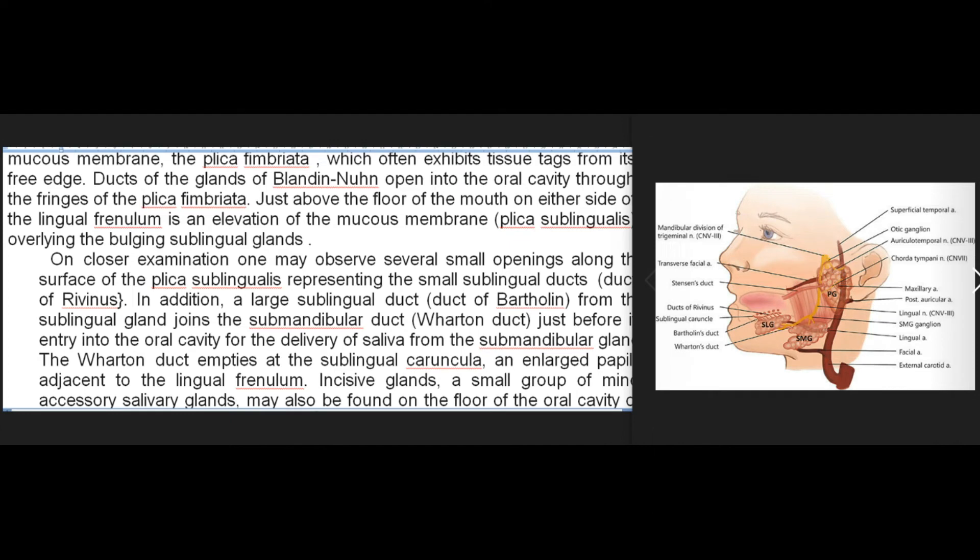Just above the floor of the mouth on either side of the lingual frenulum is an elevation of the mucous membrane, the plica sublingualis, overlying the bulging sublingual glands. Several small openings along the surface represent the small sublingual ducts (ducts of Rivinus). In addition, a large sublingual duct (duct of Bartholin) from the sublingual gland joins the submandibular duct (Wharton's duct) just before its entry into the oral cavity. The Wharton's duct empties at the sublingual caruncle, an enlarged papilla adjacent to the lingual frenulum.